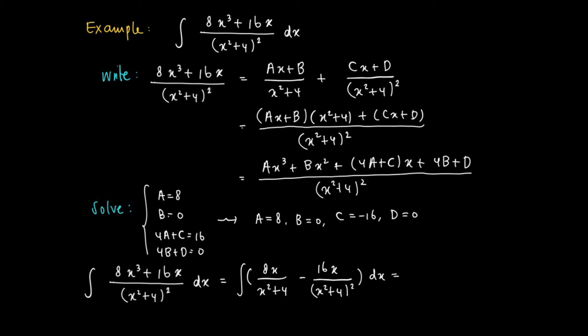The primitive of the first term is 4 times the natural logarithm of (x² + 4), and the primitive of minus 16x divided by (x² + 4)² equals 8 divided by (x² + 4). And of course, don't forget the integration constant.